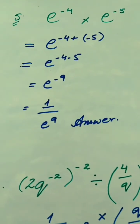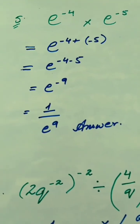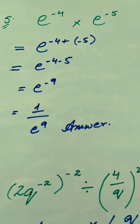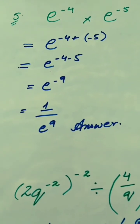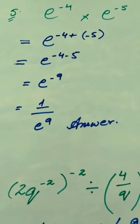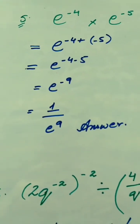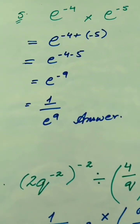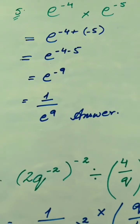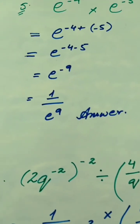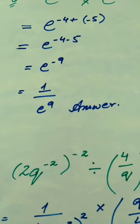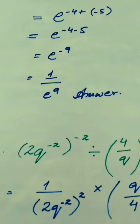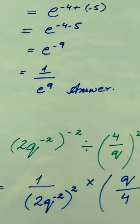Now look at another question: e raised to the power minus 4, multiplied by e raised to the power minus 5. Here we have variable e. As we know, when the variable is the same, the powers add. So minus 4 added to minus 5: since plus multiplied by minus equals minus, the question becomes e to the power minus 4 minus 5, which equals e raised to the power minus 9. To convert the negative power to positive, we divide by 1.